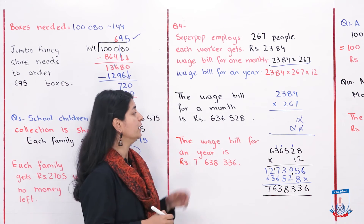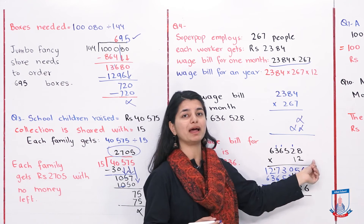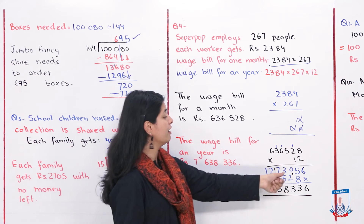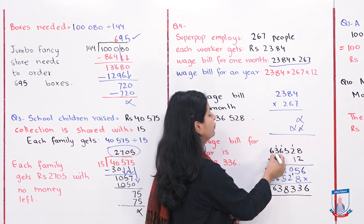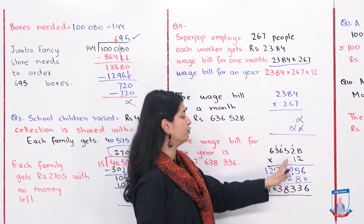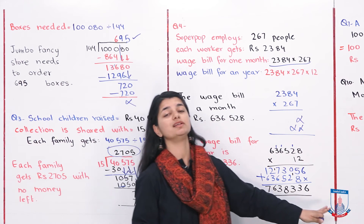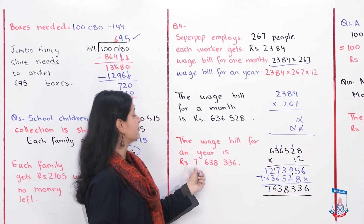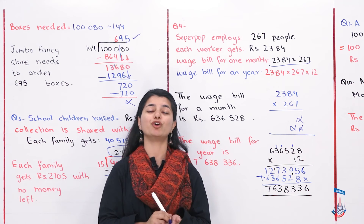For one year we multiply Rs 636,528 by 12. Working through: 2 eights are 16 carry 1; 2 twos are 4 plus 1 is 5; 2 fives are 10 carry 1; 2 sixes are 12 carry 1, giving 13; 2 threes are 6 plus 1 is 7; 2 sixes are 12. Then multiply everything by 1 giving the same digits. Adding all partial products gives 7,638,336. The wage bill for one year is Rs 7,638,336.